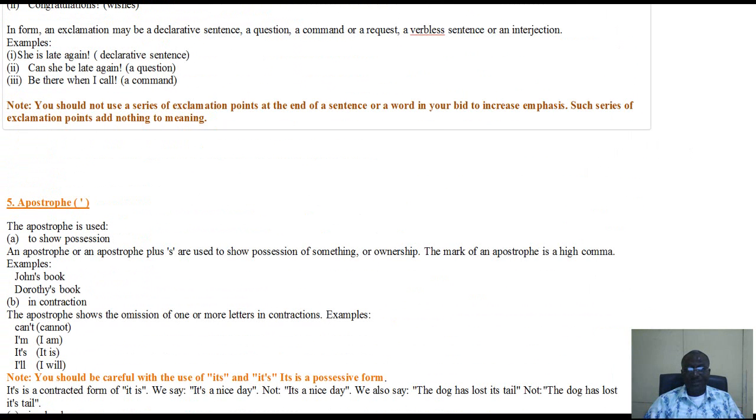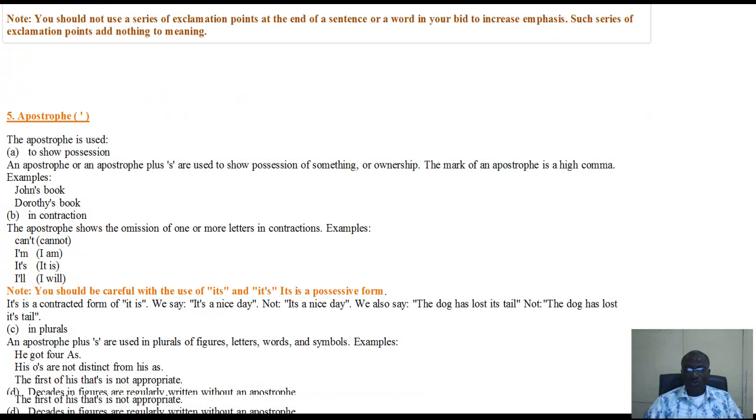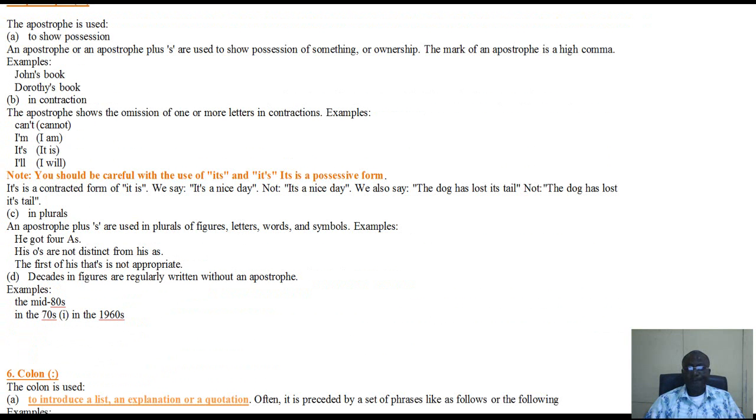Then we go to the apostrophe. The apostrophe is used first to show possession. Here we have John's book. You have John, you have the apostrophe, and then you have the S which shows possession. The apostrophe can also be used in contraction when we are fusing words together. An example is can't, which is a fusion of two words, can and not. It's, which is a fusion of it and is.